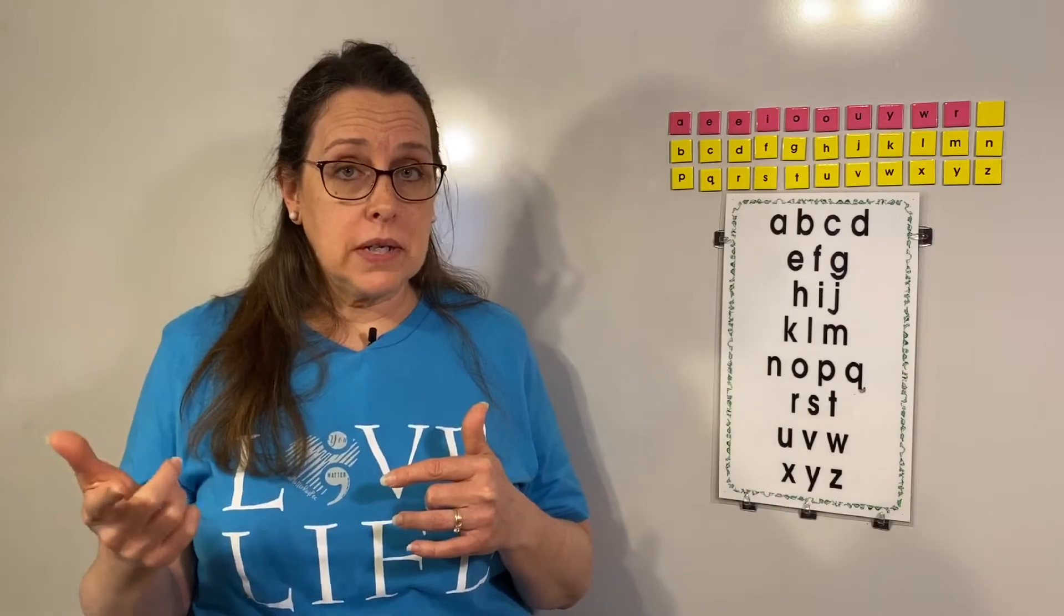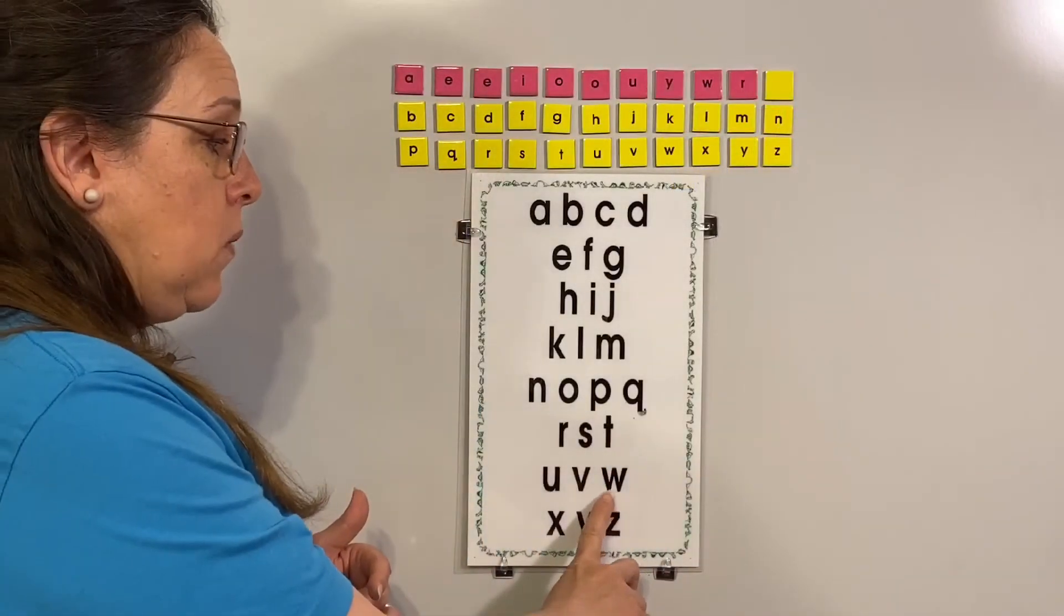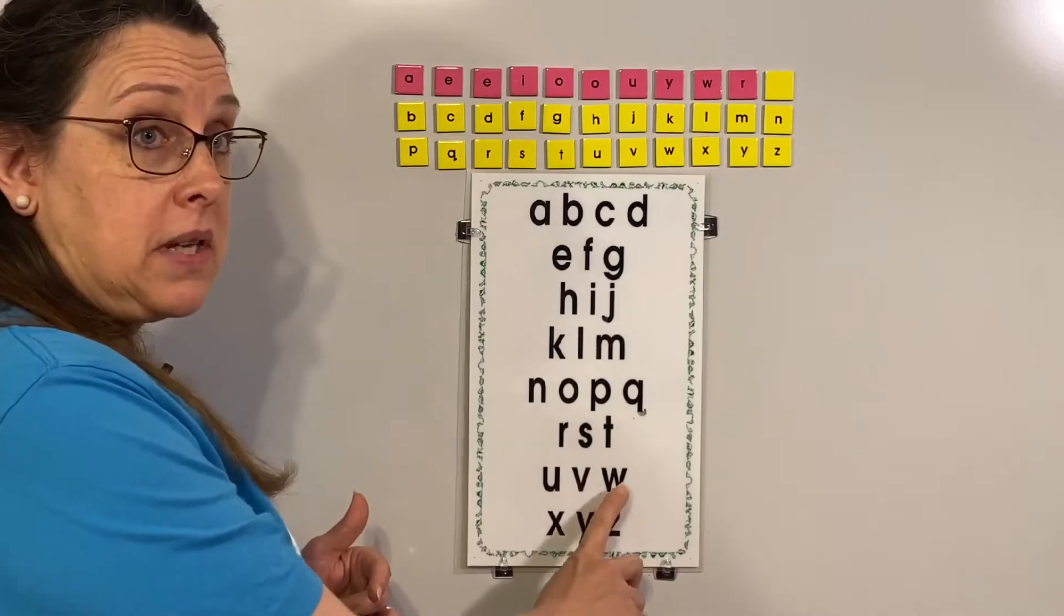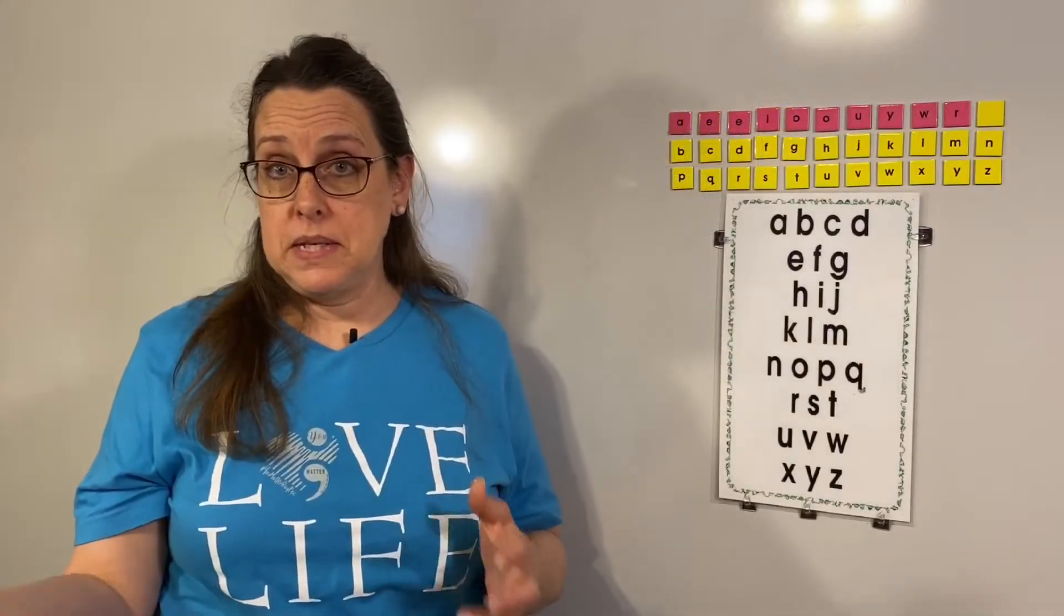There's another trick to it. Whenever you get to the W, instead of pointing one time, you have to double tap the W. So watch for that whenever I'm showing you how to do the ABC Point and Sing.